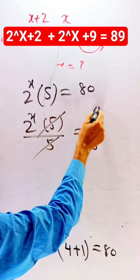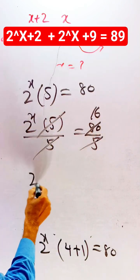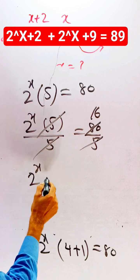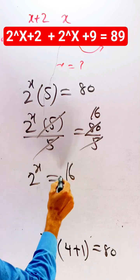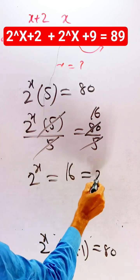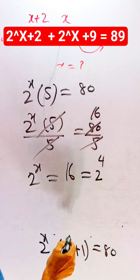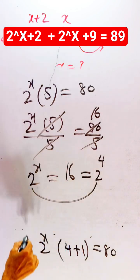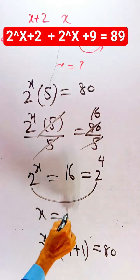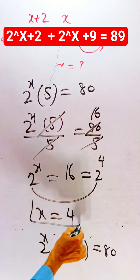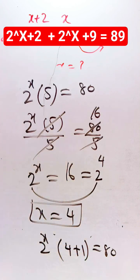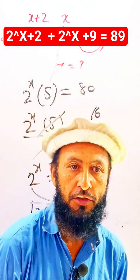Dividing both sides by 5, we get 2^x equals 16. Since 16 can be written as 2^4, and the bases are the same, we conclude that x equals 4 is our solution.